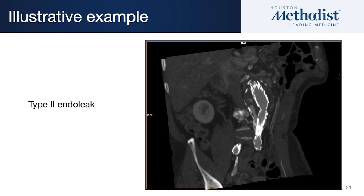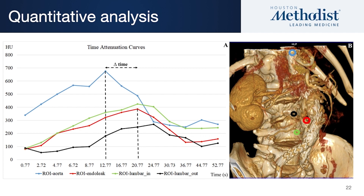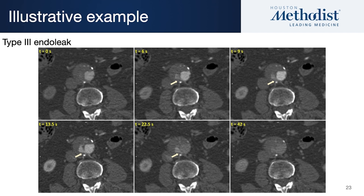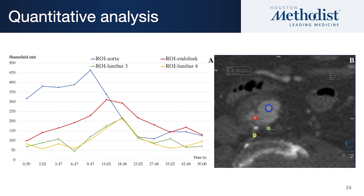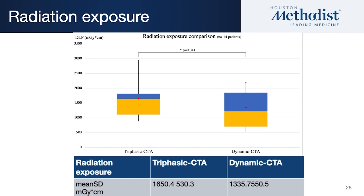Here's an example of a type 2 endoleak. You can see dye — it looks like it's refluxing from inferior, approximately. It could be a type 1b, but it's not. When you actually look at the dye arrival curves, you see that the time of dye arrival is shifted way to the patient's right. So both anatomical imaging and quantitated dye arrival times help distinguish the type. Type 3 endoleak is not very common, but they tend to be a little bit more similar to a type 1 endoleak than a type 2 endoleak, and you can actually analyze these.